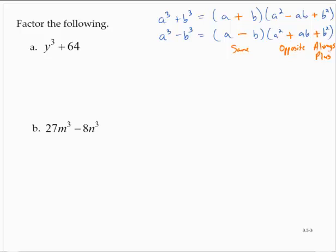So let's use it. Y cube plus 64 is a sum of cubes because y cube is the cube of y, and 64 is the cube of 4. So this is my a of the pattern and this is my b of the pattern. So I have a binomial and a trinomial. I put in the a, I put in the b.